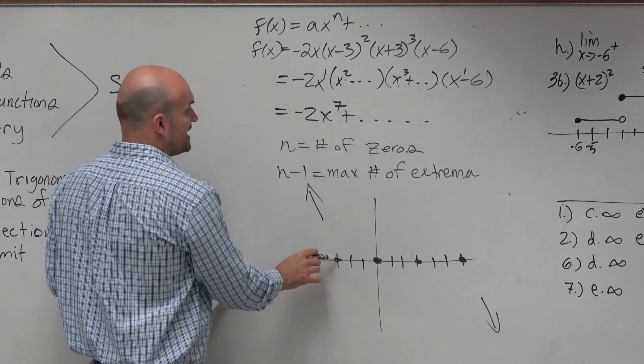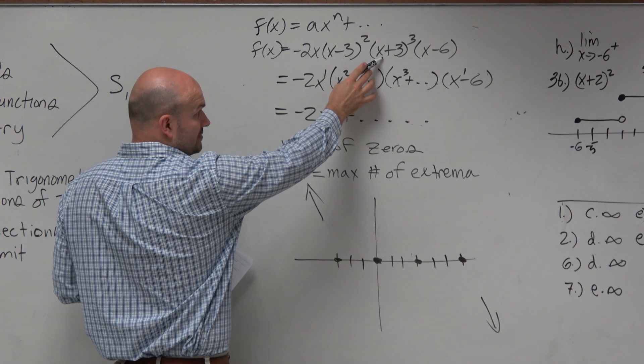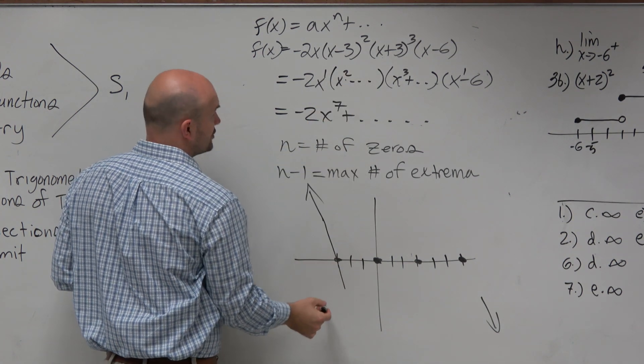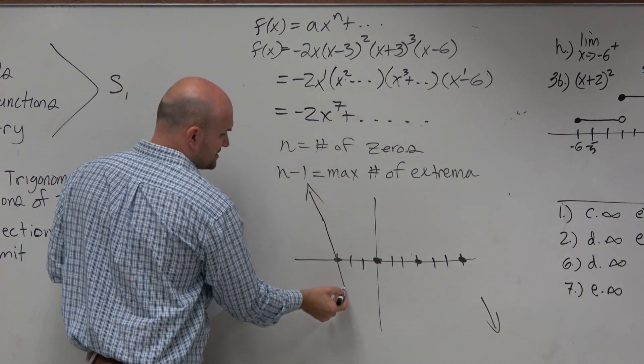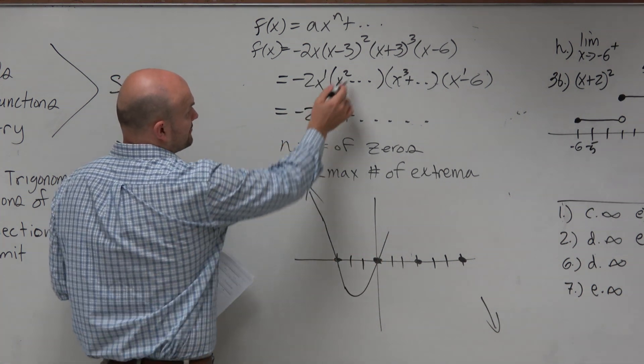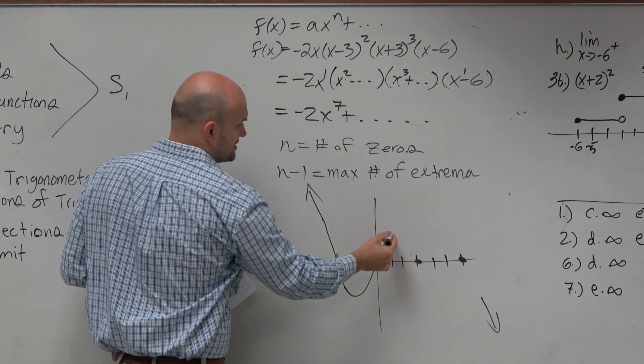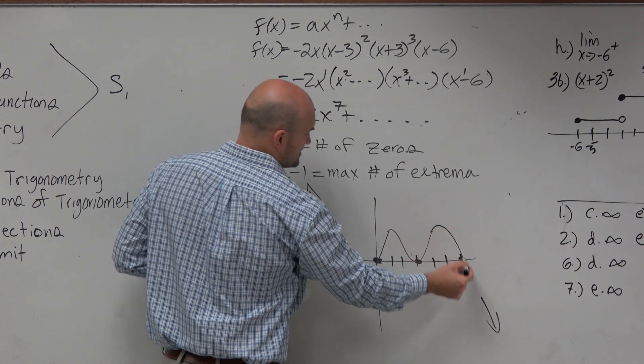So let's go ahead, negative 3, that has an odd multiplicity, so it crosses. At 0, that's an odd multiplicity, so that crosses. At positive 3, that's an even multiplicity, so that bounces. And then at 6, that's an odd multiplicity, so that crosses.